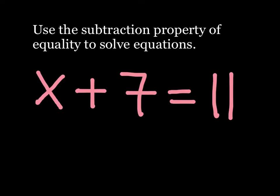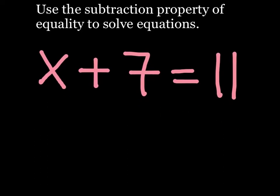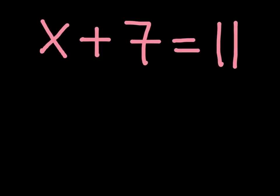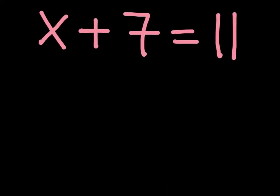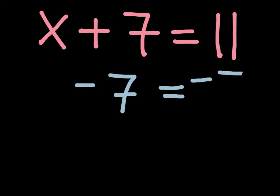So using the subtraction property of equality, I can subtract a value from both sides of the equation. In this particular instance, I will subtract 7 from the left side of the equation and from the right side of the equation.